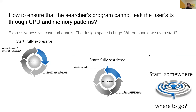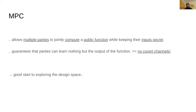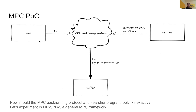What we decided to do is start with MPC, because MPC interestingly guarantees that the parties cannot learn anything but the output of the function — so there are no covert channels. As a general statement: MPC allows multiple parties to jointly compute a public function while keeping the inputs secret. This is a good starting point to explore the design space. Going back to the original question of secret searching on secret transactions — how would this look with MPC? Instead of using SGX, we now have an MPC back-running protocol.